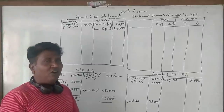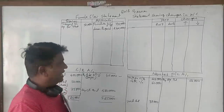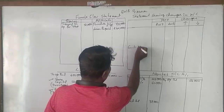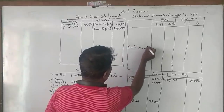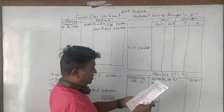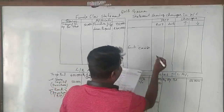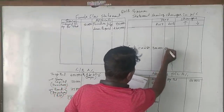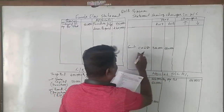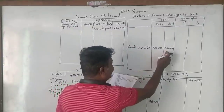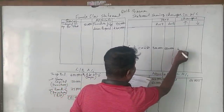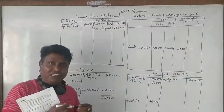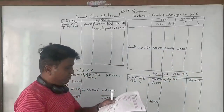Next we have creditors. Creditors is always a current liability. Creditors worth Rs 3,60,000 and Rs 2,60,000. As I told you, if current liability decreases, there is an increase in working capital. That point is now accounted for.